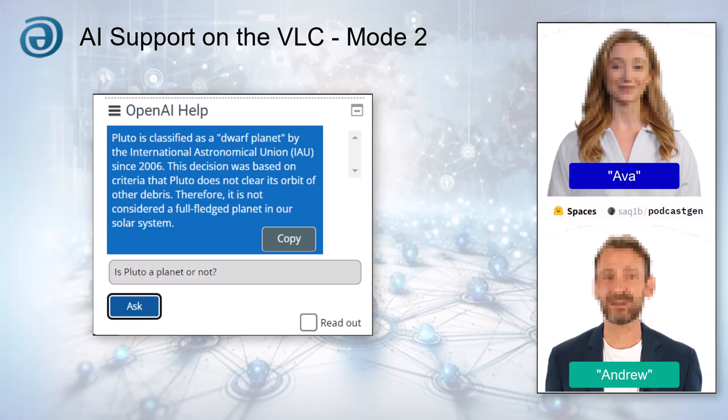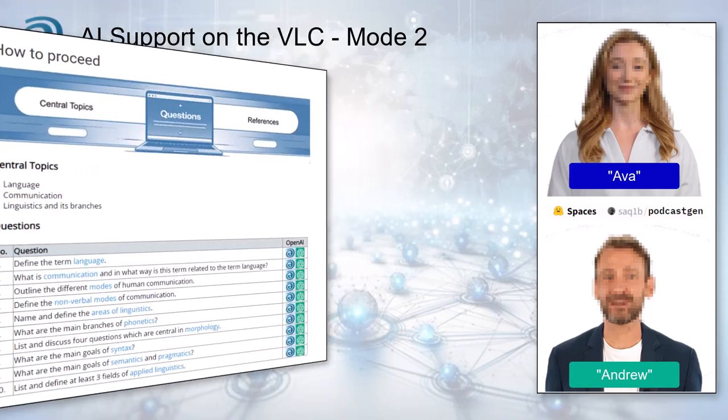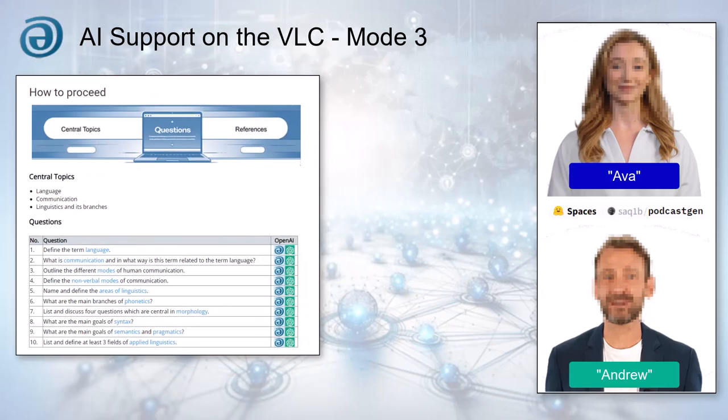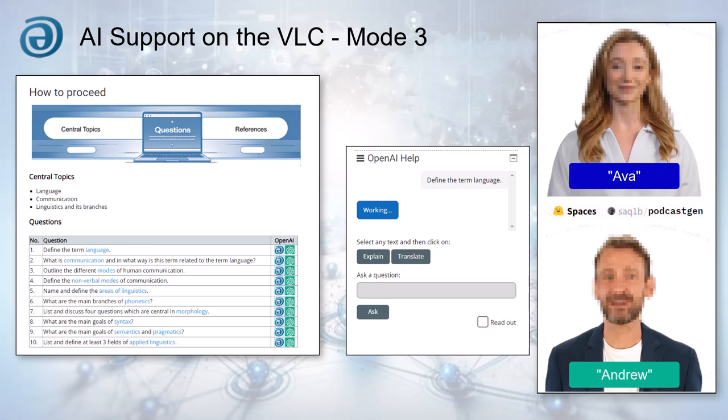And what about Mode 3? Mode 3 is more integrated into the core structure, specifically in the How to Proceed activities and the Questions and Terms sections of AI Enhanced Courses. Students can click a VLC OpenAI symbol next to a question, sending it to the OpenAI help system for a detailed answer.